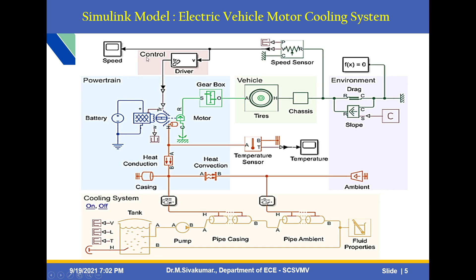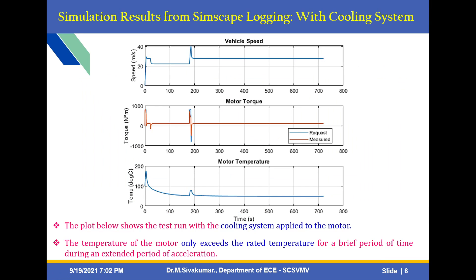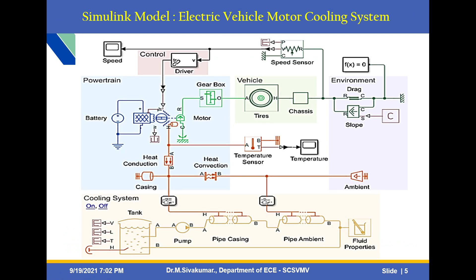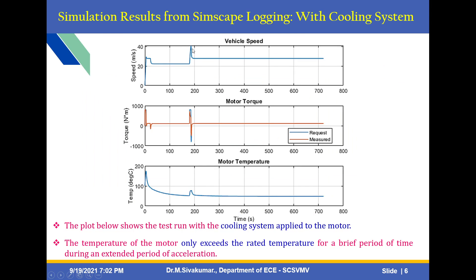The control system provides speed and temperature of the electric vehicle motor cooling system. Whenever the environment's temperature sensor detects that the motor temperature increases, the cooling system will turn on automatically. The simulation result from Simscape logging shows vehicle speed, motor torque, and motor temperature. Time versus temperature plots show the requested and measured values. You can command a threshold temperature — whenever it exceeds the temperature level, it will automatically turn on and off.